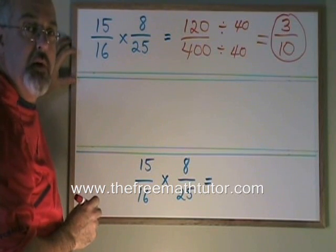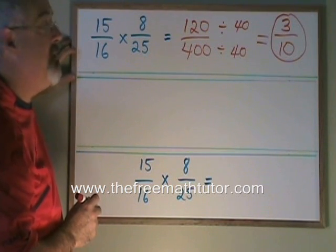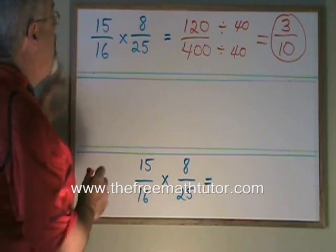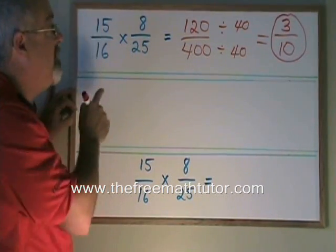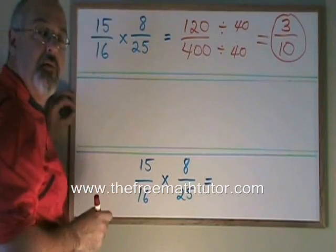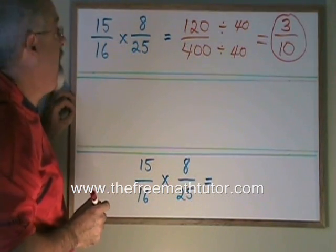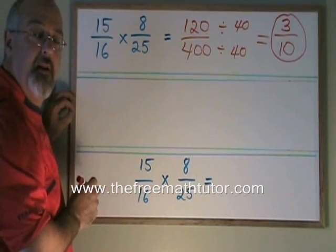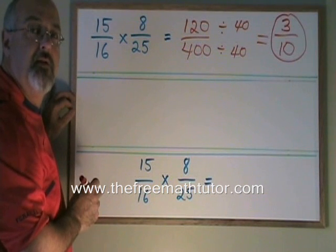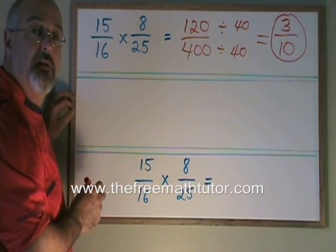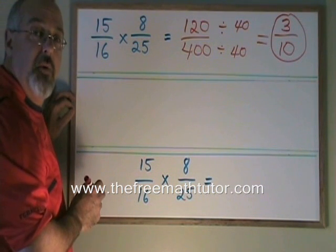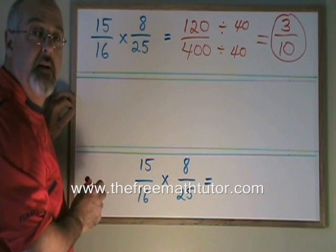But is there another way to do it? Can I find an easier way to do it? We could try reducing the original fractions. If they could be reduced, we'd have smaller numbers and it would be easier to get to the right answer. But 15/16 cannot be reduced—15 and 16 do not have any common factors. And 8/25 also cannot be reduced. 8 and 25 do not have any common factors.